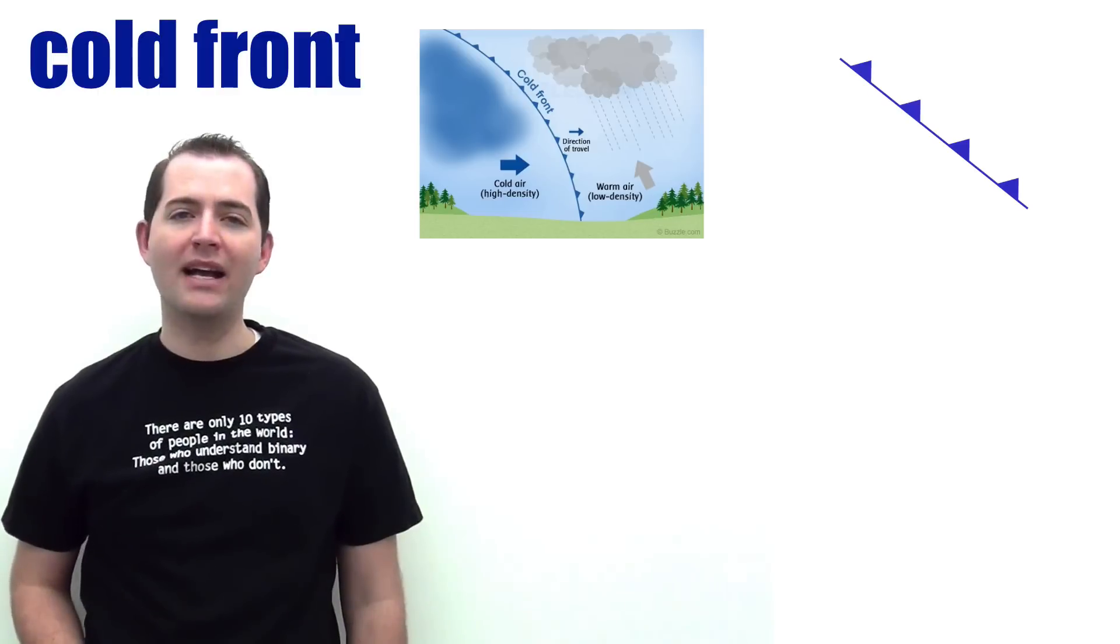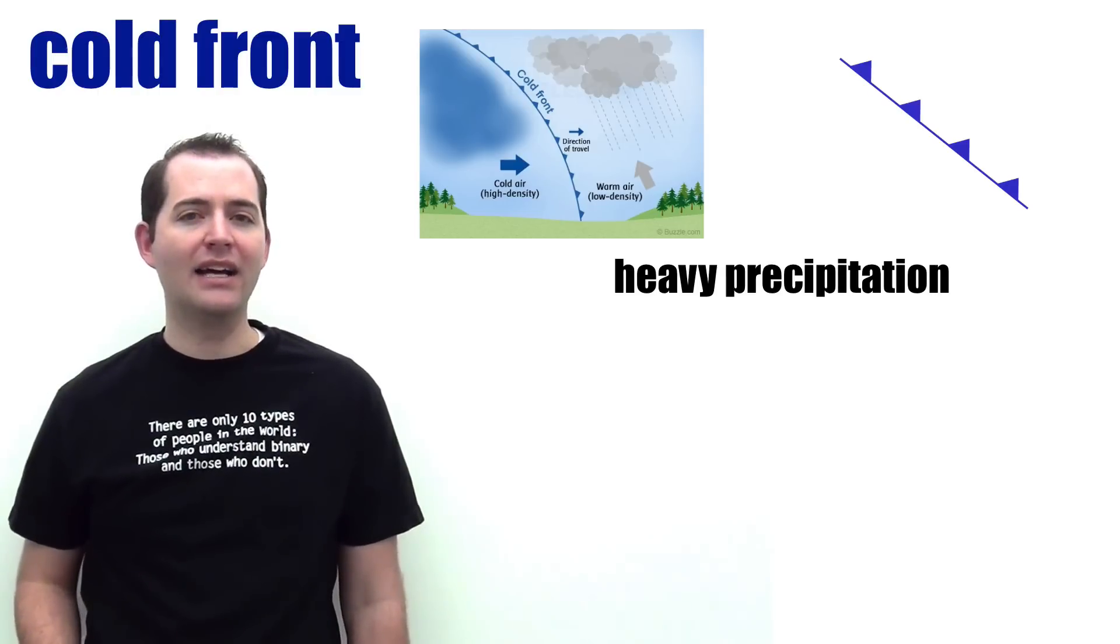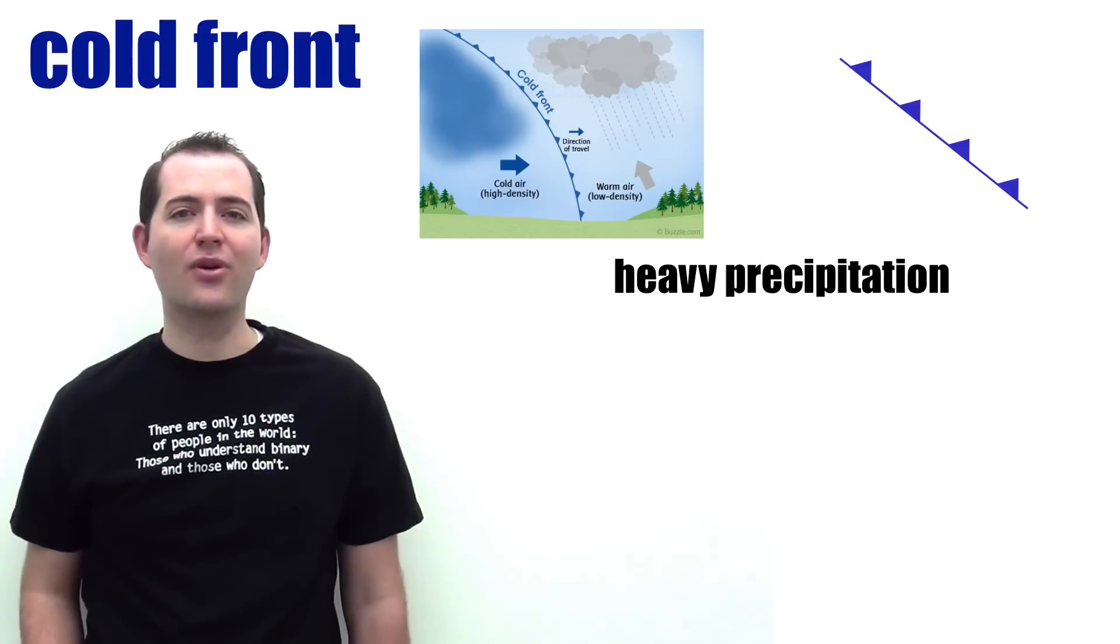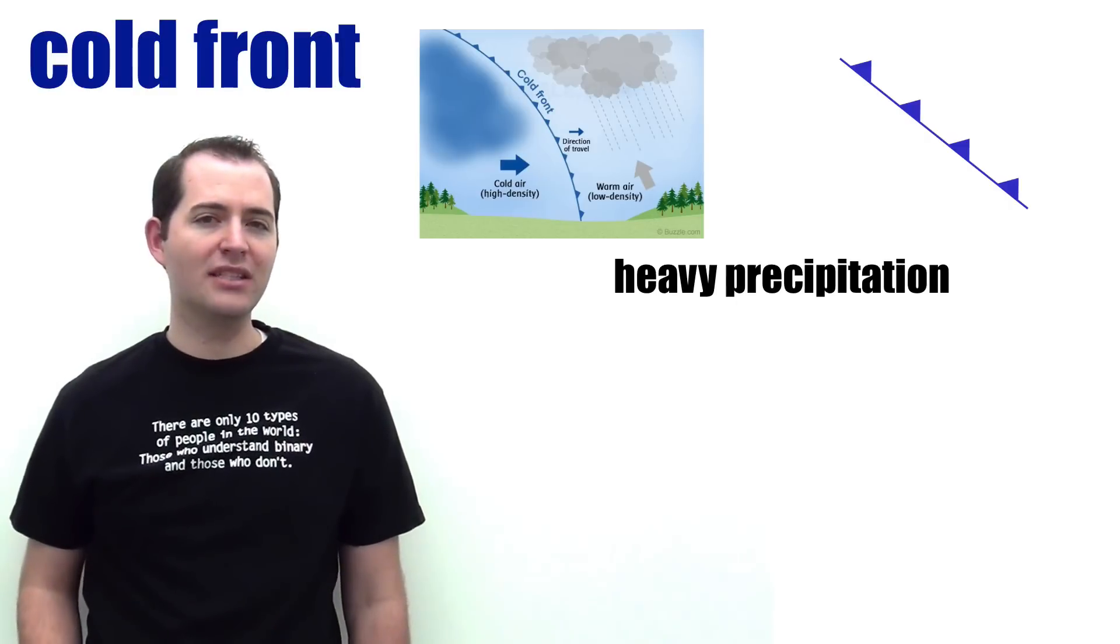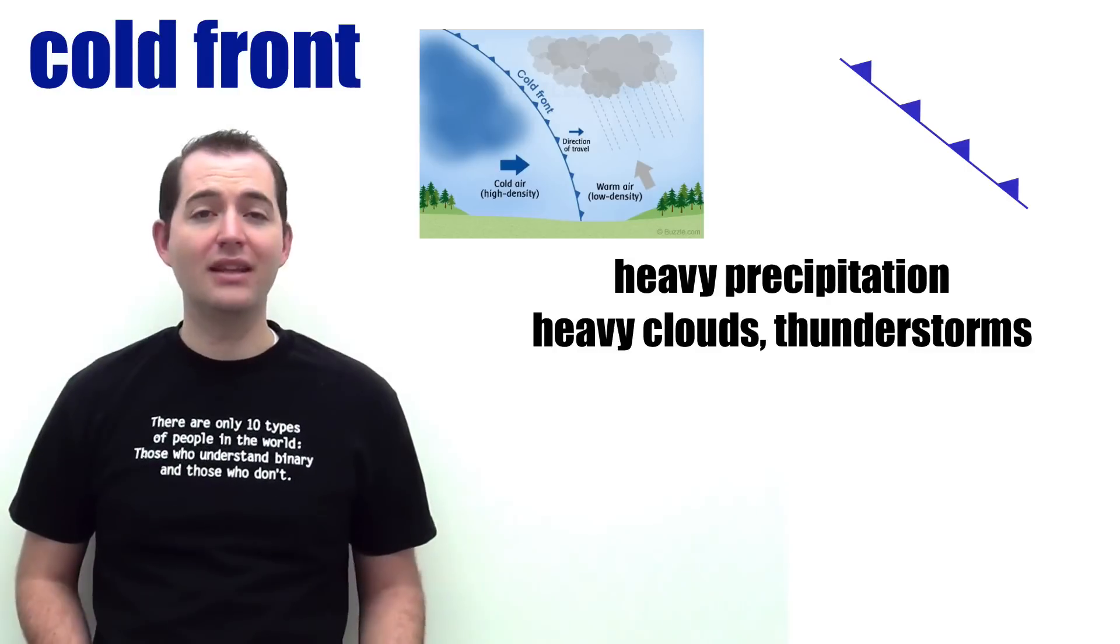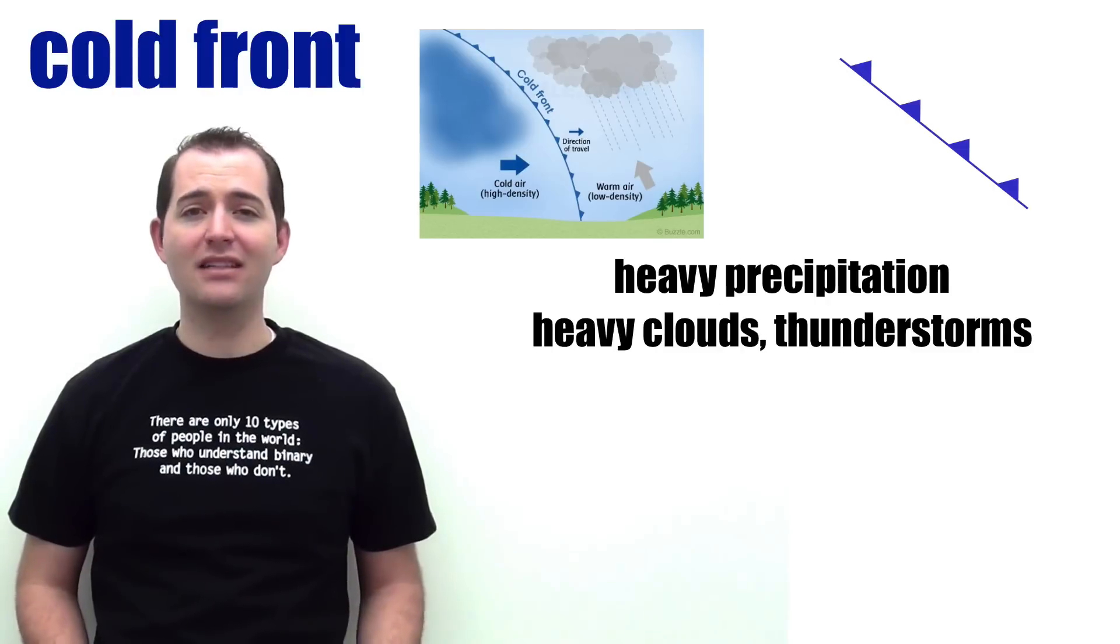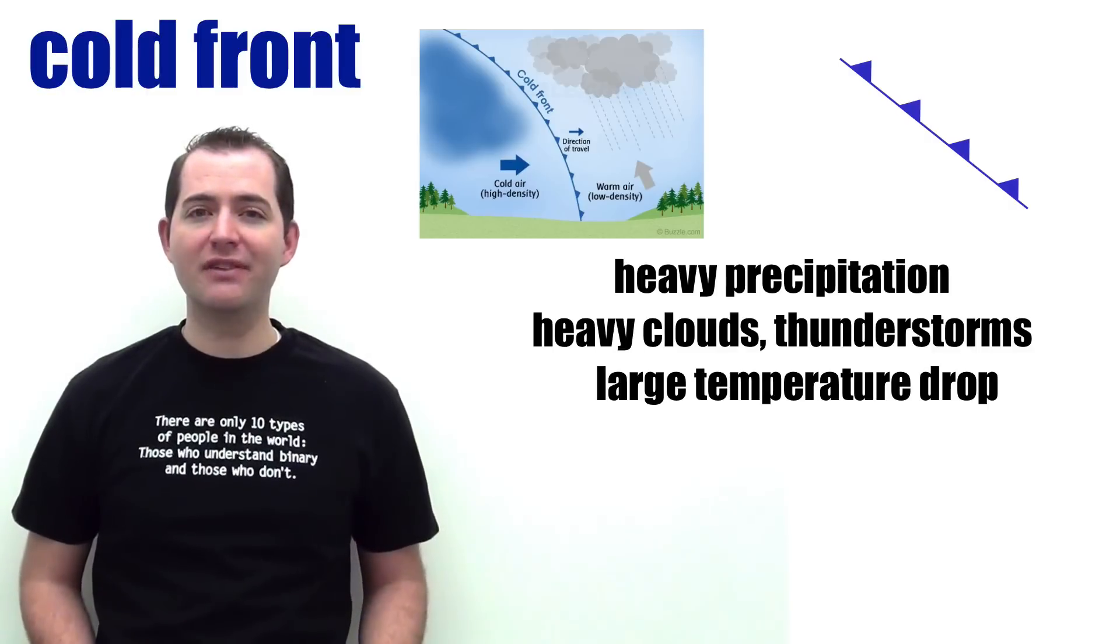When a cold front passes over an area, it usually brings heavy rain as warm moist air is forced up into the atmosphere. This also usually brings with it heavy clouds and even thunderstorms. Within an hour of a cold front passing over a location, the temperature can drop upwards of 15 degrees.